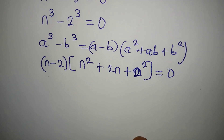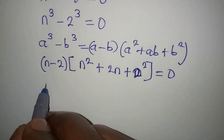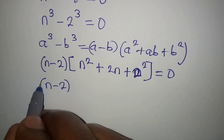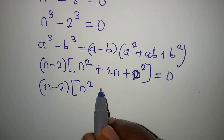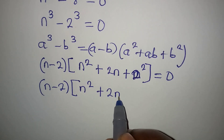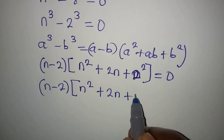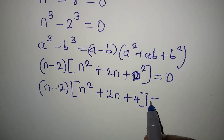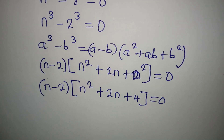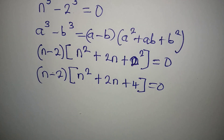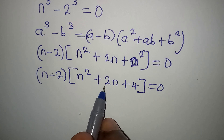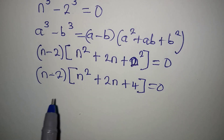Now, what do I do from here? We have n minus 2, and then in here I have n squared plus 2n plus 4 equal to 0. Now, we apply the zero product rule. So, either of these will be equal to 0. Let me pick this quadratic expression and equate it to 0.